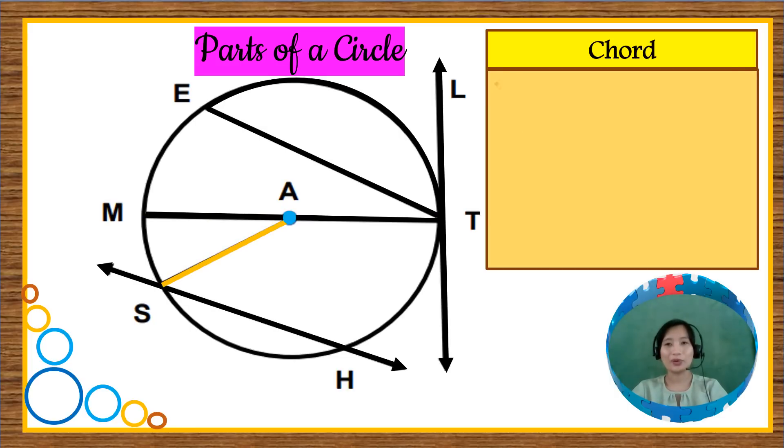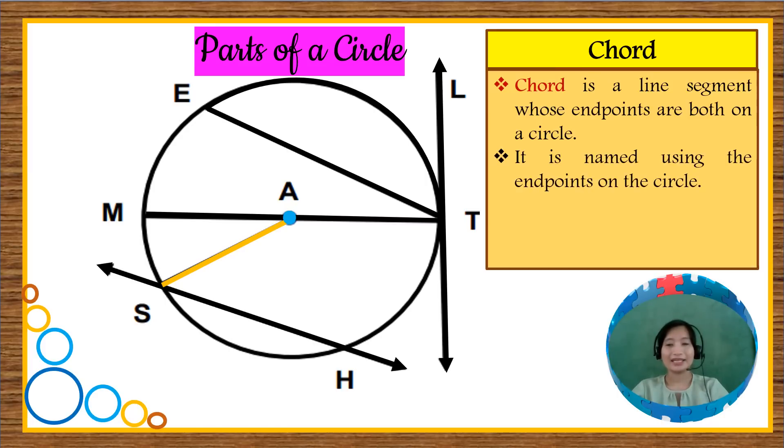Next is the chord. Chord is a line segment whose endpoints are both on a circle. It is named using the endpoints on the circle. In the illustration, the chords are the following. We have line segment MT and line segment ET. Both of their endpoints are found at the circle or on the circle. So they are considered chord.